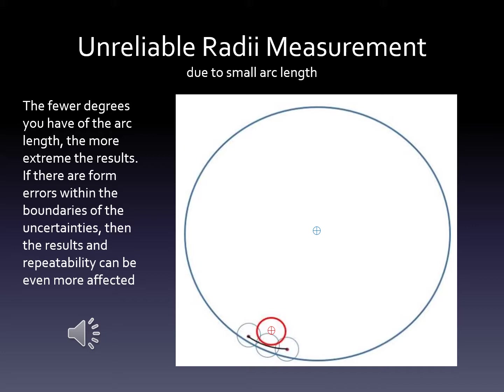Here we show the same example with differences in constructed radii through different point variations within the area of uncertainty. The results are more dramatic because the fewer degrees of arc length you have, the more extreme the results become. If there are form errors within the boundaries of the uncertainties, then the results and repeatability can be even more affected. Look at the difference here between the red diameter and the large blue diameter — the small arc is the true measure of an arc length that goes through points within the area of uncertainty, and then we show a small constructed radius and a large constructed radius through those same areas of uncertainty. The results are quite different.